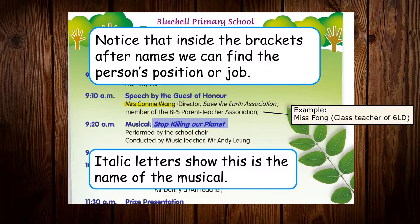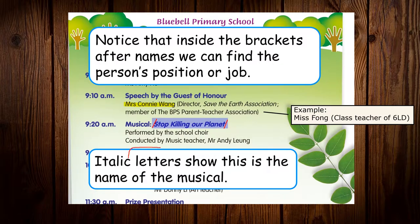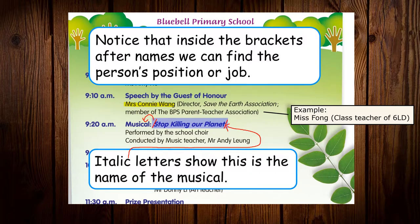For this one, italic letters show it is the name of the musical — the name of the show. You can see the letters are like this; the words are not straight. So this is italic. Italic means the letters are not straight, and that means it's the name of the musical: Stop Killing Our Planet.